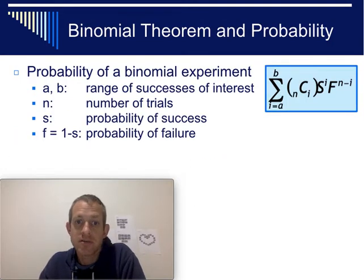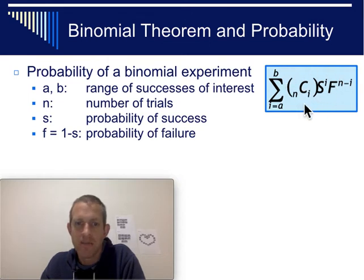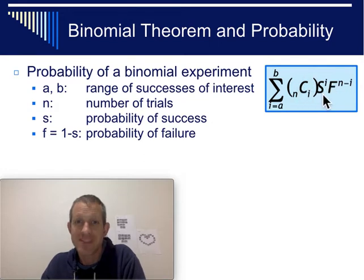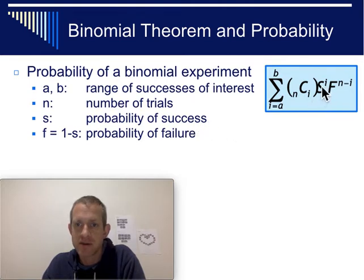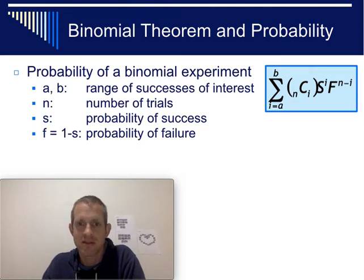In general, calculating the probability of a binomial experiment is summarized in this formula, where A and B range over the successes you're interested in. The coefficient comes from Pascal's triangle, S is the probability of success, and F is the probability of failure — the complement, subtracted from 100% of success. This formula is great, but I usually just write it out and look at which terms I need.